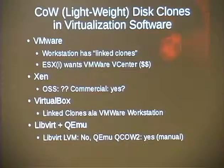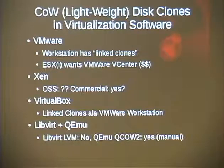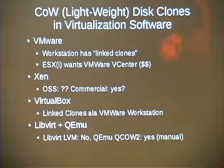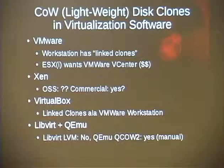These copy-on-write disk images are usually called lightweight disk images. VMware Workstation calls them Linked Clones — basically a snapshot you tag as a template, then create new clones from. In ESX you can do it too, though they really want you to have VMware vCenter for thin provisioning. For Xen open-source, I couldn't find lightweight disk image support, though the commercial side has an XC clone command. VirtualBox has basically the same idea. For LibVirt and QEMU, if you use LVM it can be done by hand, and the QEMU-specific image format QCOW2 supports this manually.